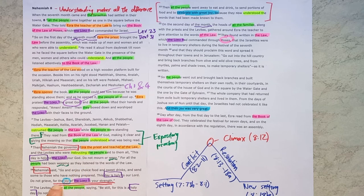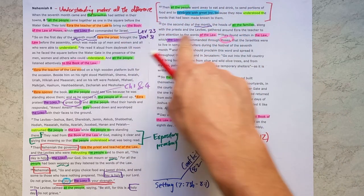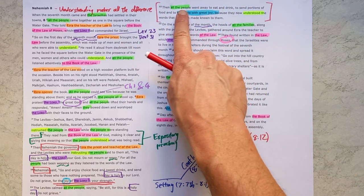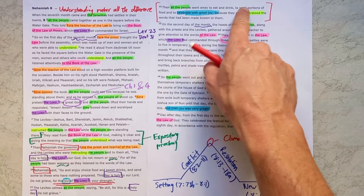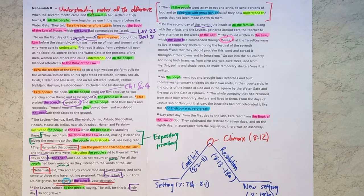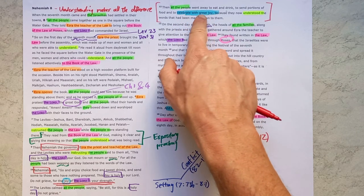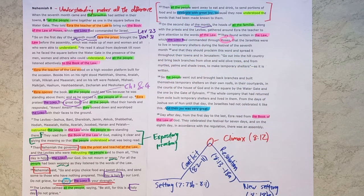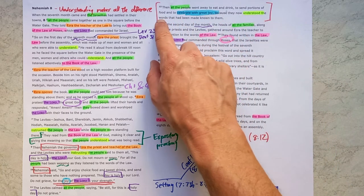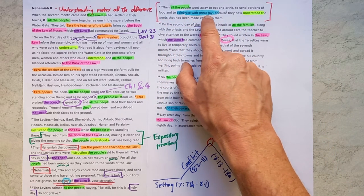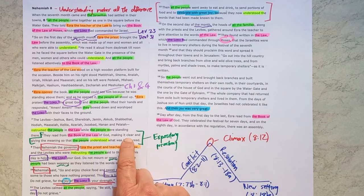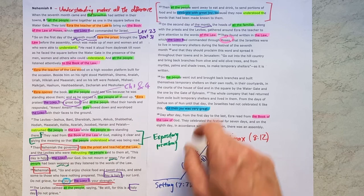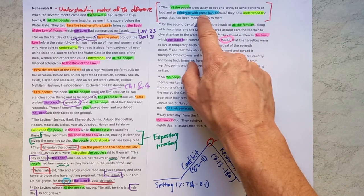And so from this weeping and grieving, as they are taught further and told the joy of the Lord is your strength, we see the high point of the story as all the people, a hundred thousand of them, go away for a great meal of celebration. They invite others who can't have a meal for themselves to join, and they celebrate with great joy because they now understood the words of the Lord. What fueled this joy was their understanding. They had been taught well. God's word had been made clear. The meaning had been given, and that understanding fueled their joy.